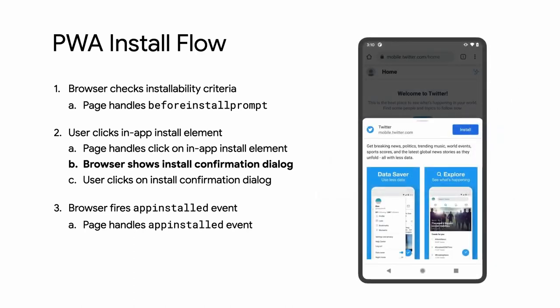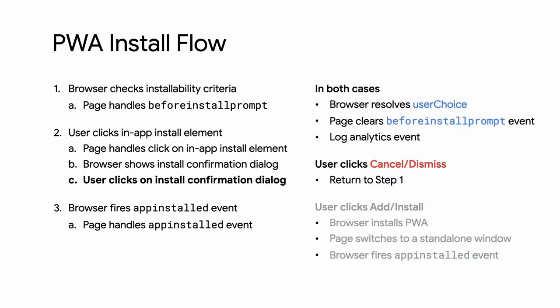On Android, if the web app manifest includes screenshots and description, a new richer install experience will be shown. If the user clicks cancel or dismiss, the install stops, the browser returns to step one, and the flow starts all over again. Otherwise, the browser installs the PWA, switches the view to a standalone window, and fires the app installed event.